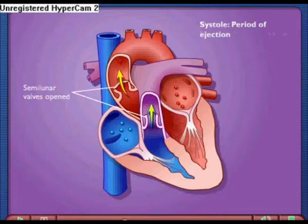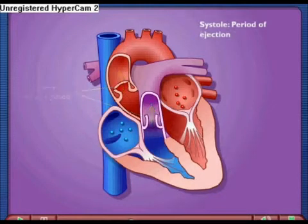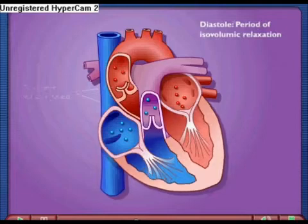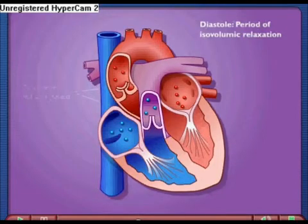When the ventricle relaxes into diastole, the pressure drops. Blood flowing back into the ventricle causes the semilunar valve to close. The atrioventricular valves remain closed.